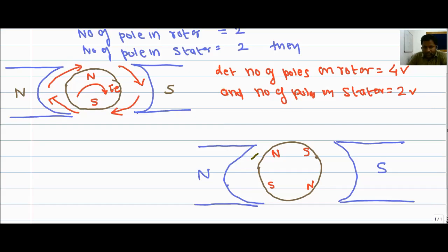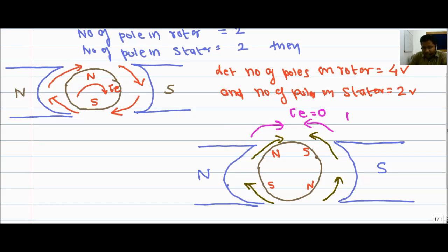In this case, the north of the rotor is repelled by the stator, and the south of the rotor is also repelled by the stator. Similarly, one north is attracted by the stator north, and another is attracted as well. We can conclude that there are 2 torques acting in opposite directions, so the electromagnetic torque becomes 0. When the number of poles on the stator and rotor are different, there is no rotation of the rotor and no electromagnetic torque is generated.